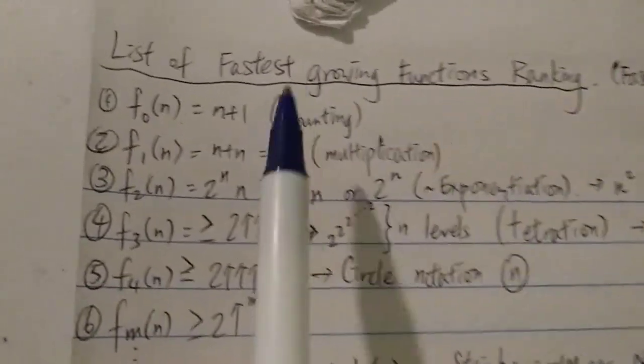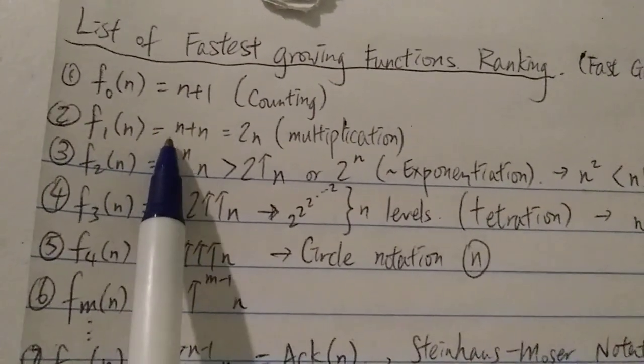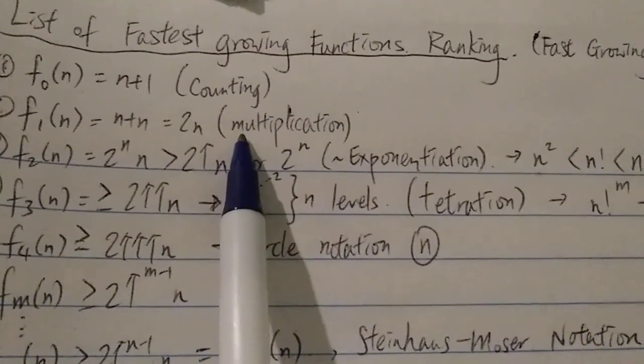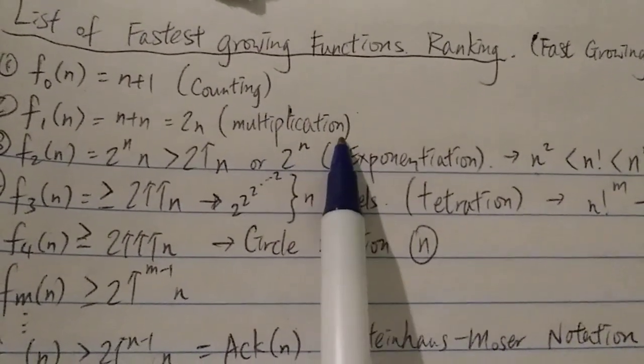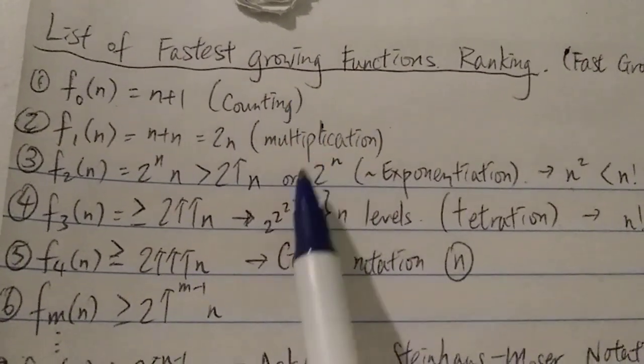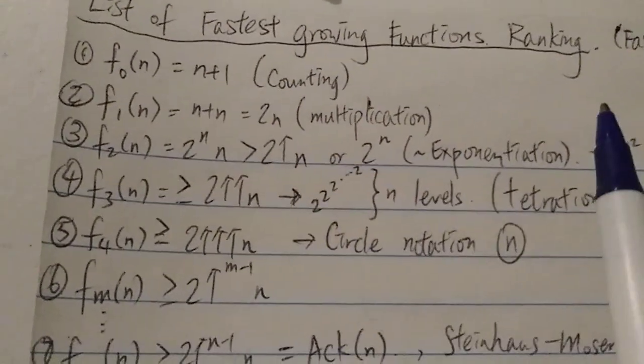So let's continue. Next, number 2, we have F1(n), which is equal to n+n, which is equal to 2n. And as you can see, this is basically multiplication, which is repeated addition. And as you can see, the pattern here, the next level is basically the iteration of the previous level.